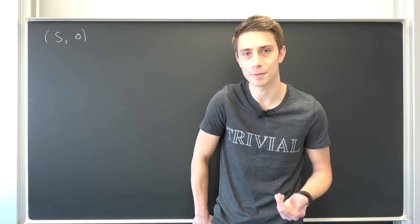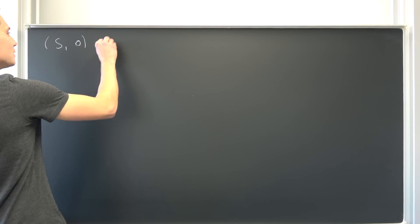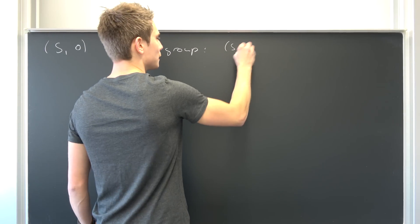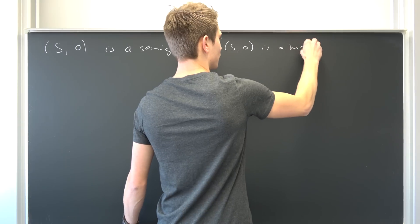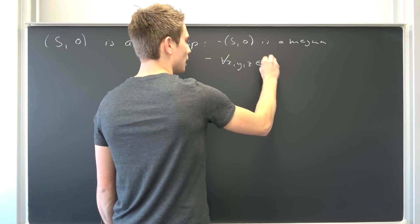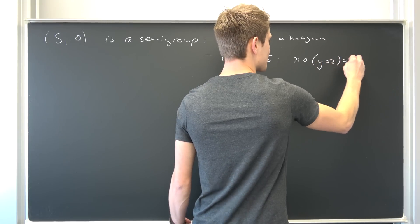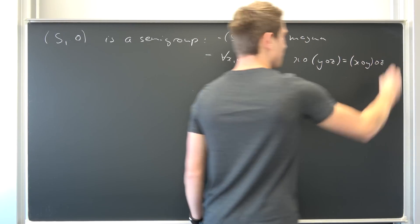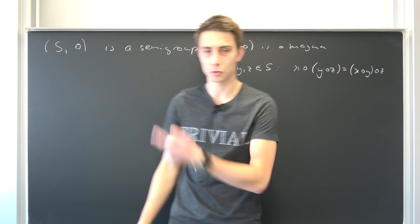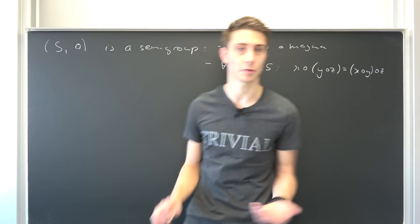What's associativity? You might have heard of it before — when working with the real numbers or natural numbers you are using it all the time. So this is a semigroup if this pair is a magma and associativity holds: for all x, y, z out of S, it holds that x ∘ (y ∘ z) = (x ∘ y) ∘ z. This is called the associative property. If this holds, we refer to this as a semigroup. Also, if this semigroup has only a finite number of elements, this is going to be a finite semigroup.